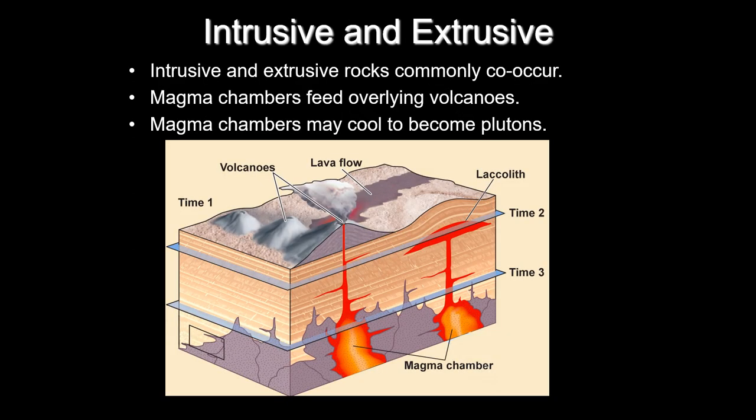Intrusive and extrusive settings usually occur together. Magma chambers below will eventually allow some molten material to reach the surface, creating volcanoes and lava flows. In order to have lava getting to the surface, you also need magma below. We put these into end member categories for simplicity of discussion, but in nature these things co-occur with each other.